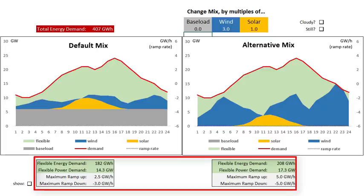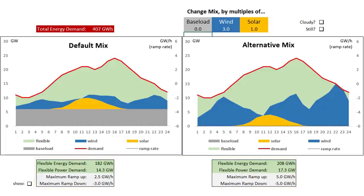Comparing those two days, the amount of energy being used from our flexible sources is fairly similar — 182 gigawatt hours on the left in the default mix, going up slightly to 208 gigawatt hours on the right. Effectively, we've turned off our baseload but managed to replace its energy by producing a lot more from wind. There are a couple of differences though: the maximum amount of power we needed at any time from flexible sources has increased from 14.3 gigawatts on the left to 17.3 gigawatts on the right, occurring around 11am when there's no wind at all.